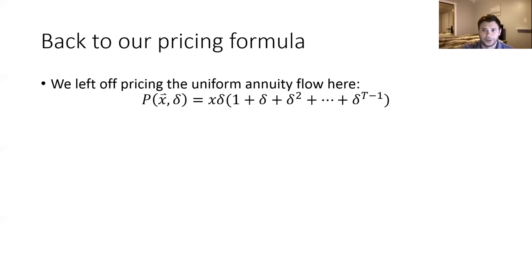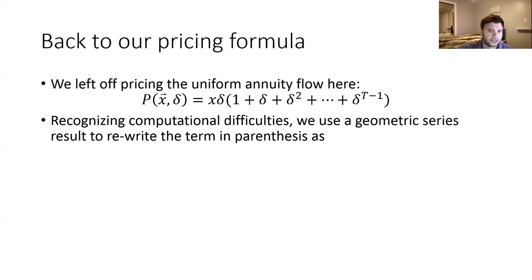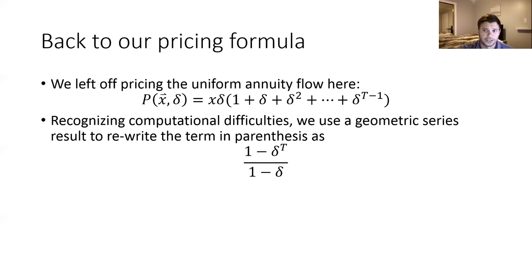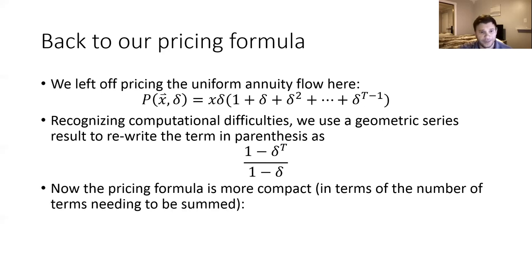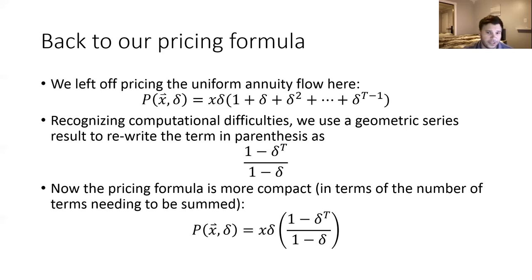We left off having recognized some computational difficulties calculating that geometric series. We thought about rewriting the term in parentheses and took a little hiatus. You won't need to know how to prove that for the exam, but you should know how to apply it in this context. We're basically going to substitute all those terms in the parentheses with this factor: one minus Delta-to-the-T, all over one minus Delta. That makes the pricing formula more compact — if I give you X, R, and T, we plug those values in, we get Delta, and we have the price of the associated cash flow stream.